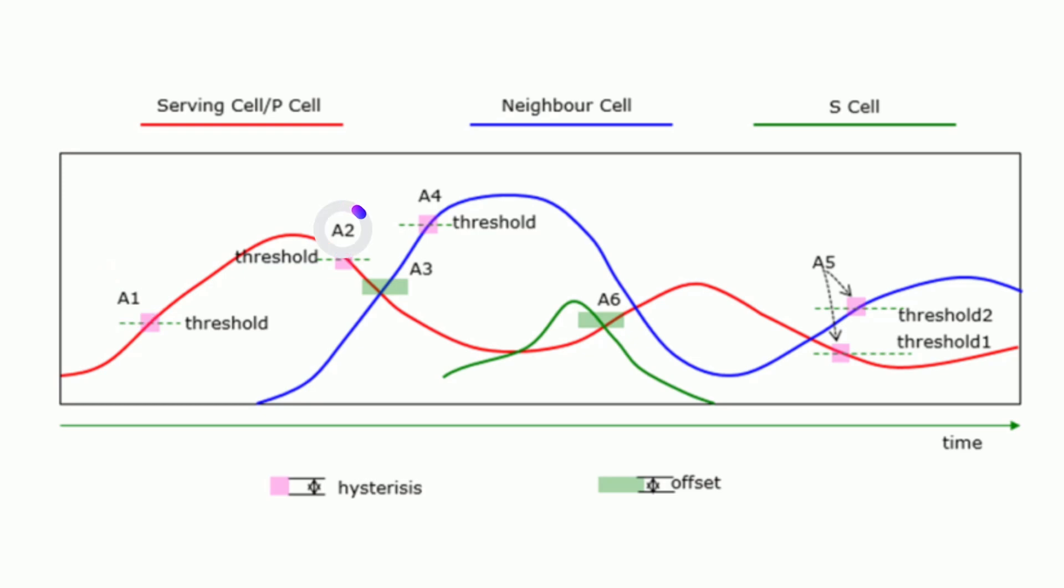Event A2. Triggered when the serving cell's signal strength falls below a predefined threshold. It suggests deteriorating serving cell conditions, indicating a potential need for a handover. In inter-frequency handovers, this event prompts the measurement of neighboring cells.